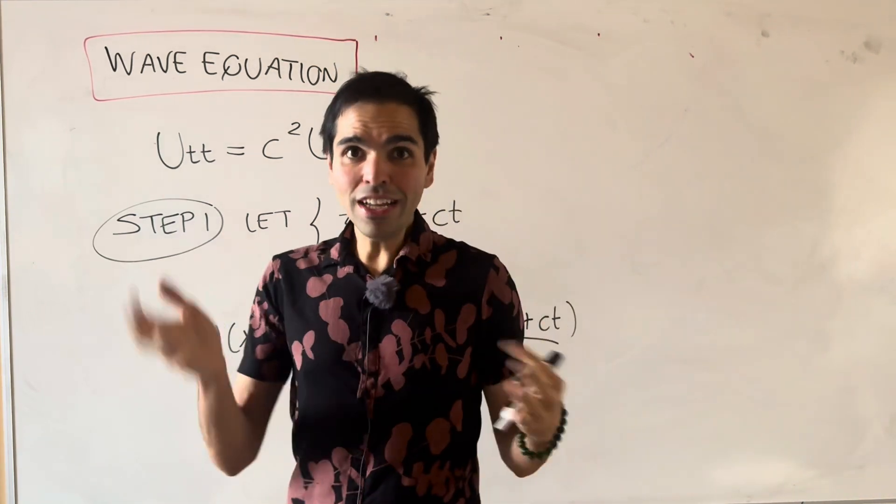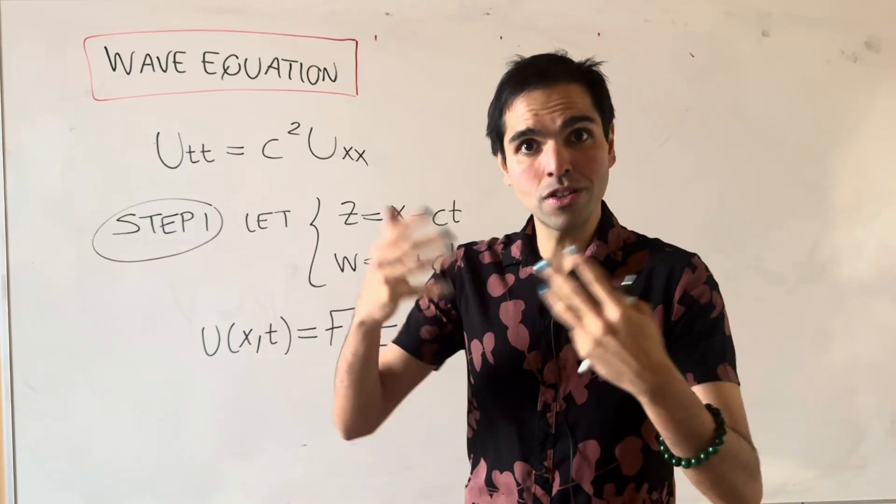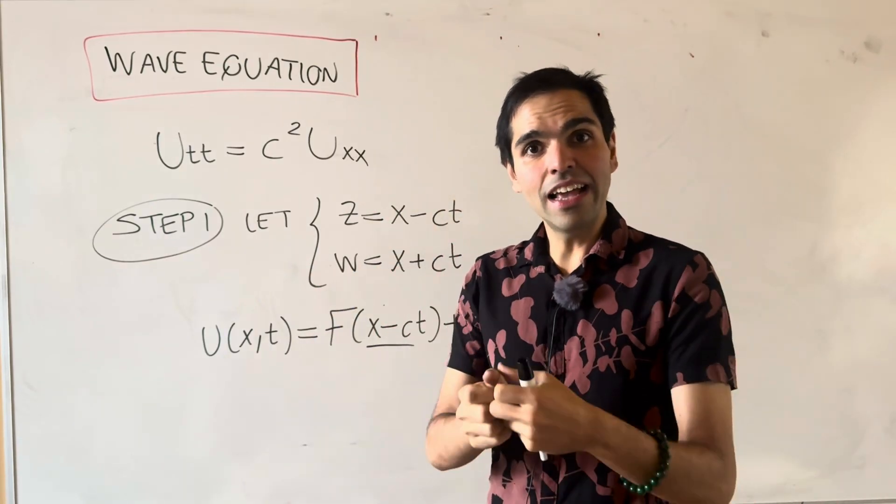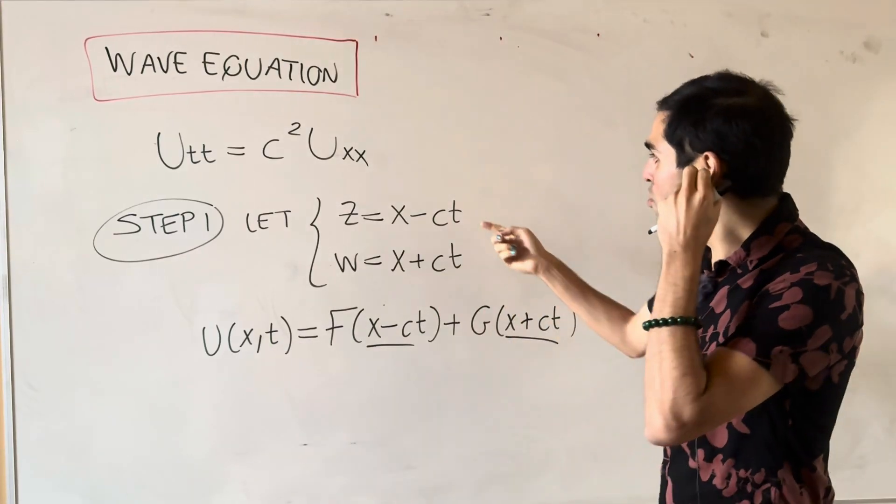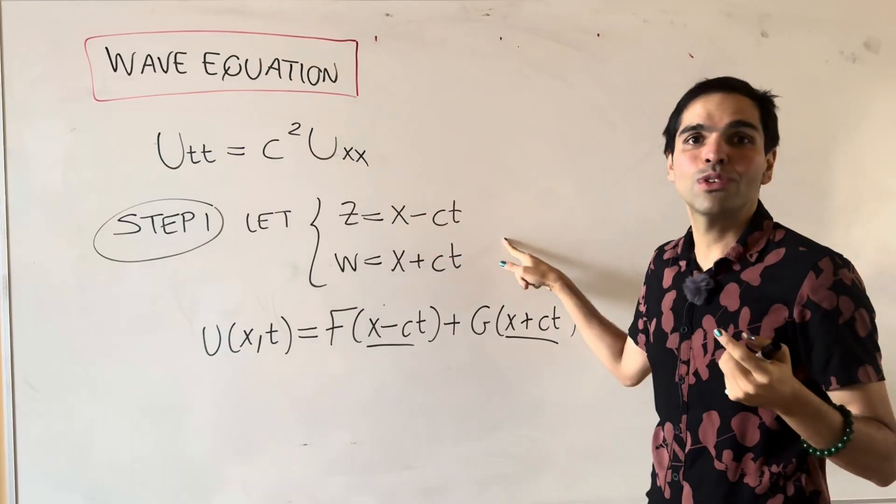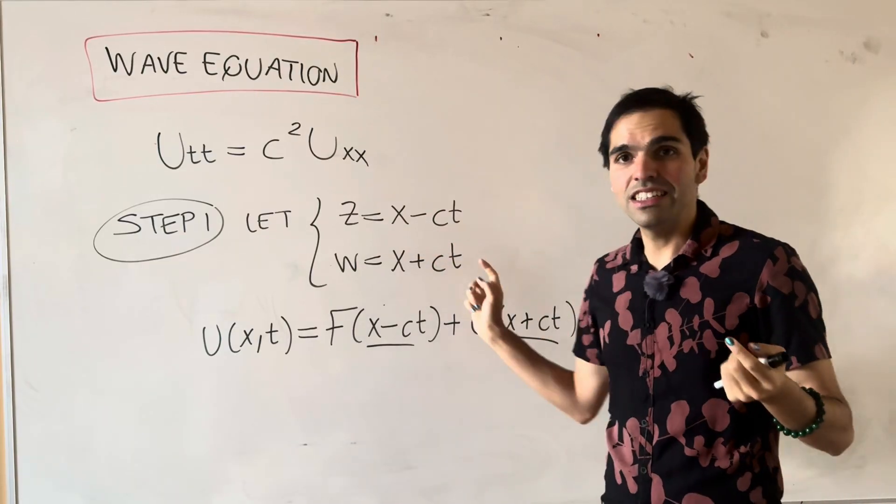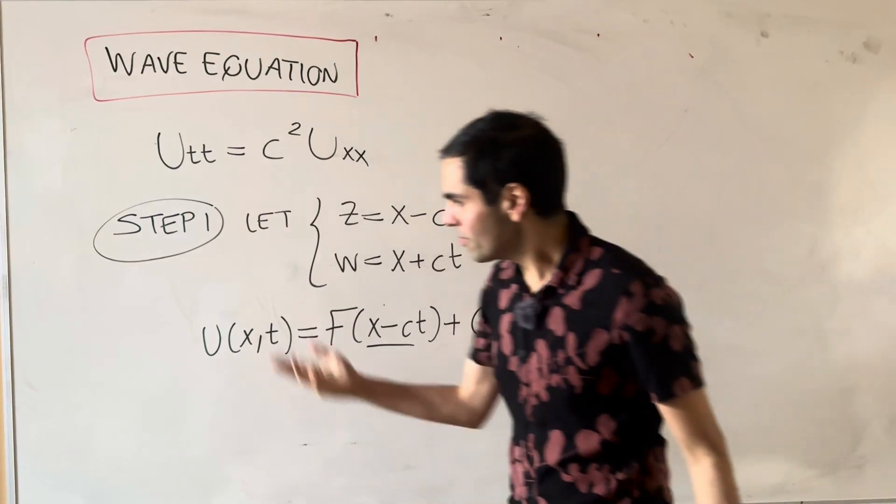But even if you didn't know what the solution looks like, you could also just look at simulations and see that our waves are moving to the left and to the right. And moving to the left and to the right is precisely represented by those coordinates, x minus ct and x plus ct, just like for the transport equation.